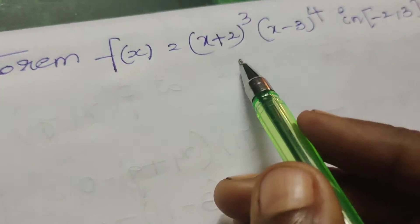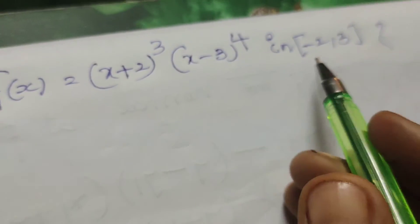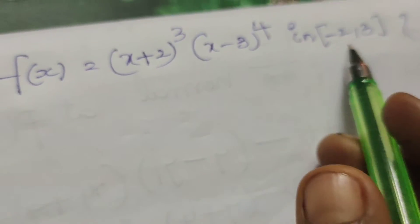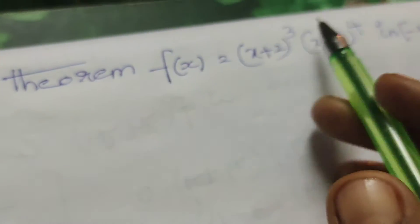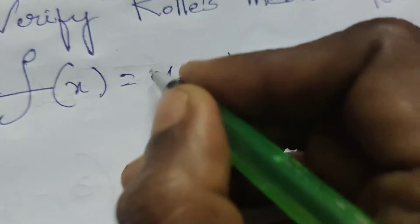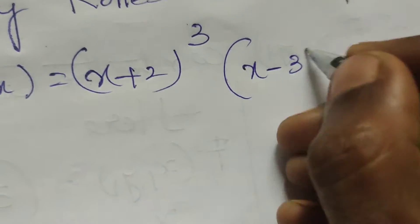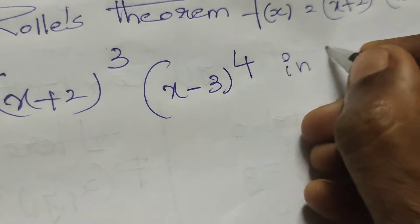The given function is f(x) = (x+2)³ · (x-3)⁴ on the interval [-2, 3].